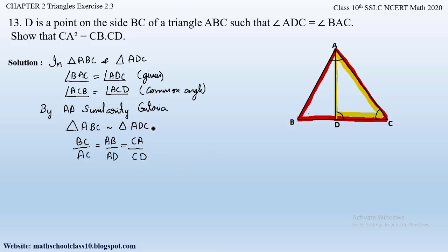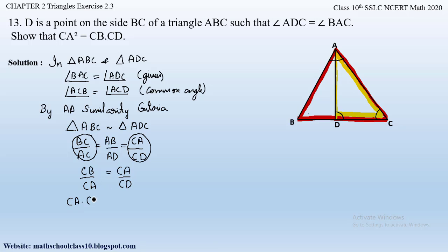Since we have to prove CA² = CB × CD, we consider the ratios involving CA, CB, and CD. Writing BC as CB and AC as CA, we take CB/CA = CA/CD. Cross-multiplying gives CA × CA = CB × CD, that is CA² = CB × CD. This is exactly what we had to prove.